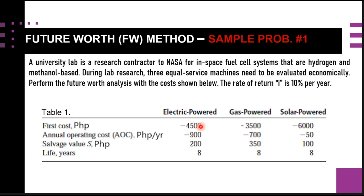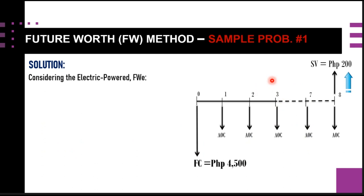The first cost is negative 4,500 because it is a cash outflow — that is why it is going downward in the cash flow diagram. The annual operating cost (AOC) is also negative since it is a cash outflow for maintenance. The salvage value is positive because it is a cash inflow or revenue, shown going upward.